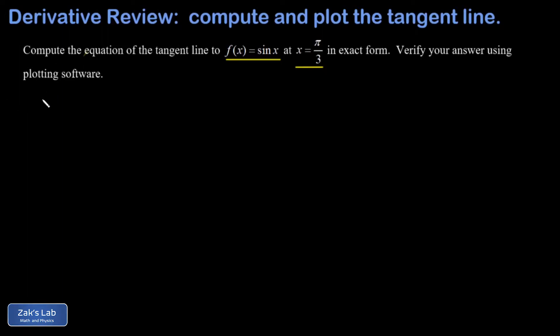The place we want to start here is by getting the slope of the tangent line at that location. So we find the first derivative of our function, which is just cosine x. Then we need to evaluate that at x equals pi over 3, and we get the cosine of pi over 3, which is 1 half. So that's the slope of our tangent line. I'll write it as m equals 1 half.